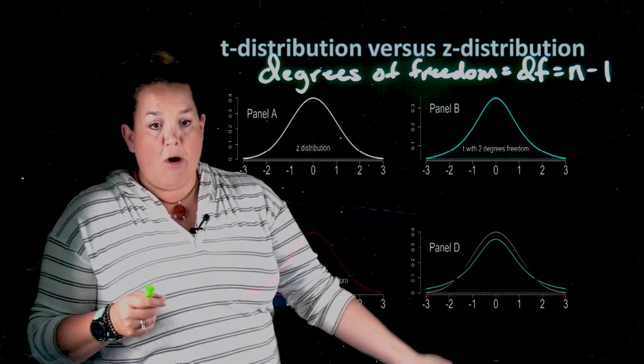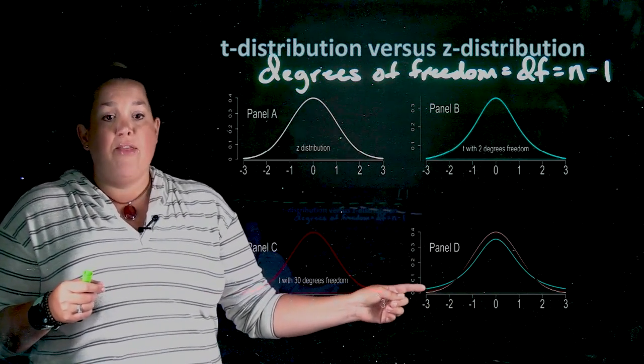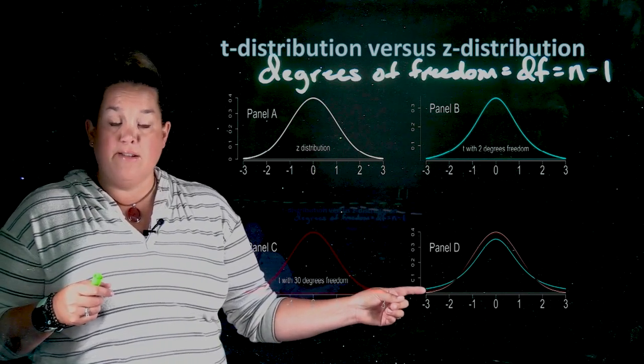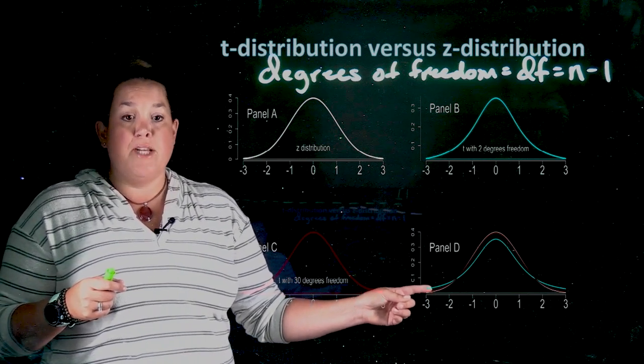You will notice that they are all centered at zero, but you can see in the tails that the t-distribution has more probability in the tails. So compared to the z-distribution that has less probability in the tails,